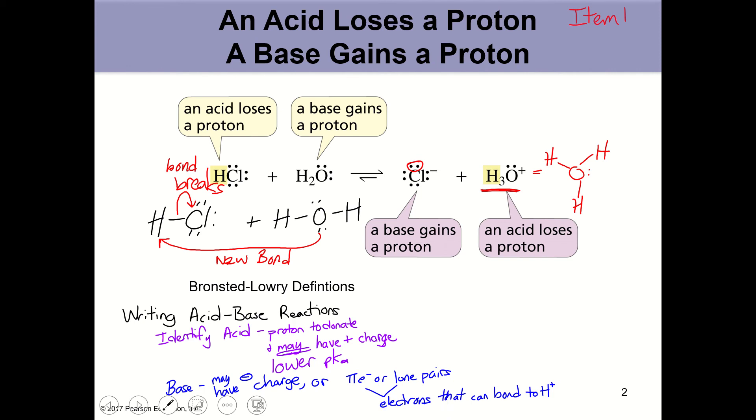A molecule cannot act as a base if it doesn't have pi electrons or lone pairs. Because a base must have a set of electrons that can bond to H or whatever atom is acting as the positive charge. Because we're going to talk about acids where hydrogen is not the positively charged atom performing the duty of an acid.